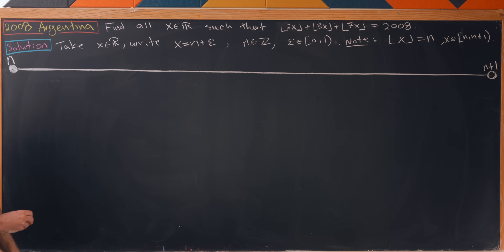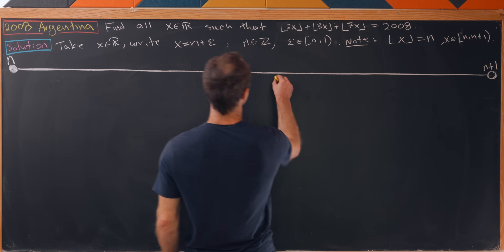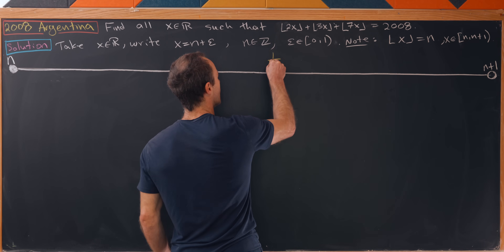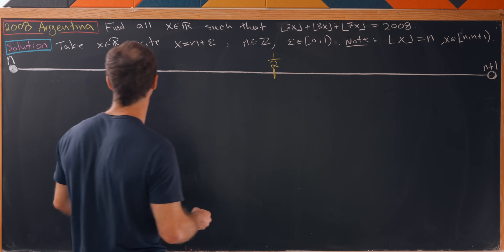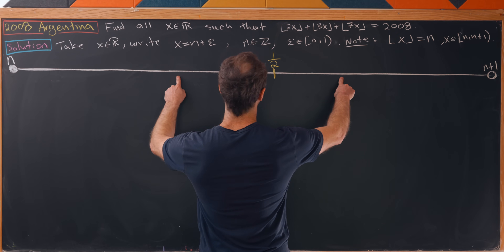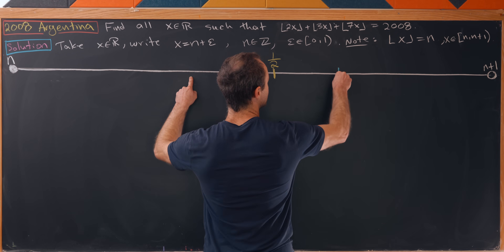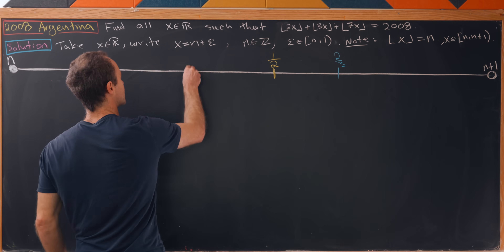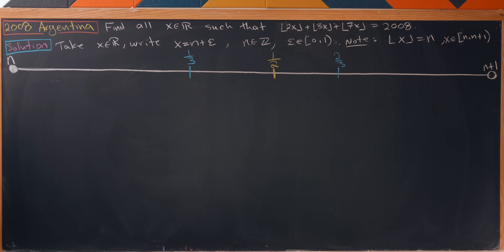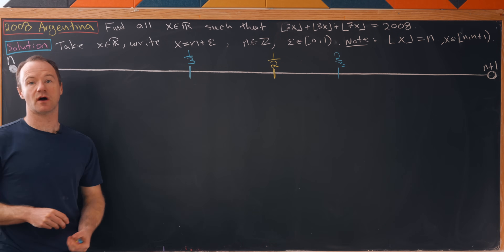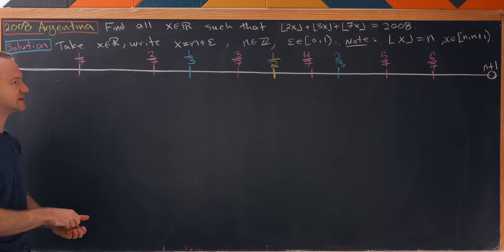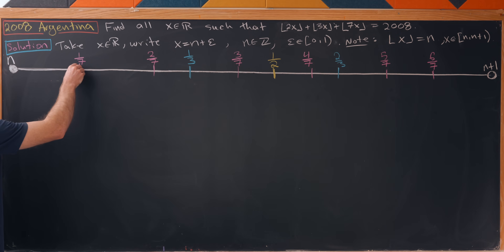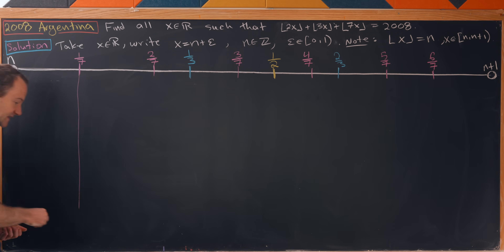Let's start by breaking the interval in half — putting a mark at one-half. Then we place a third and two-thirds on the board. And now let's also get the one-seventh tick marks on the board as well. That gives us the motivation for how we should split this interval into pieces.